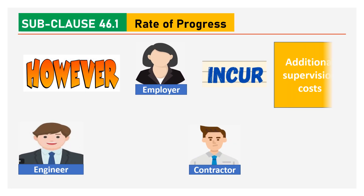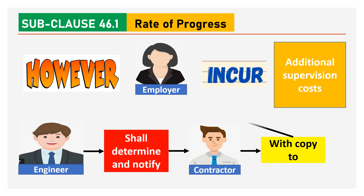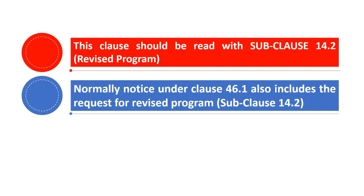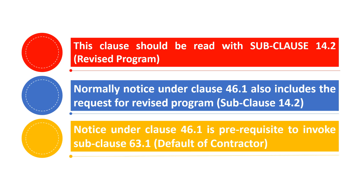However, if the employer incurs any additional supervision cost, the engineer shall determine the same and notify the contractor with a copy to the employer. This subclause should be read with subclause 14.2 on revised program. Normally, a notice under subclause 46.1 also includes the request for a revised program under subclause 14.2. Notice under subclause 46.1 is a pre-requisite to invoke subclause 63.1, i.e., default of the contractor.